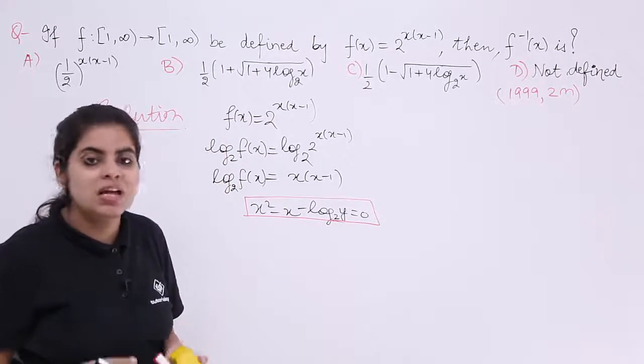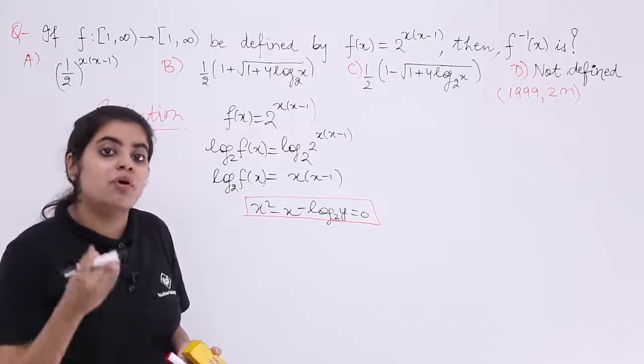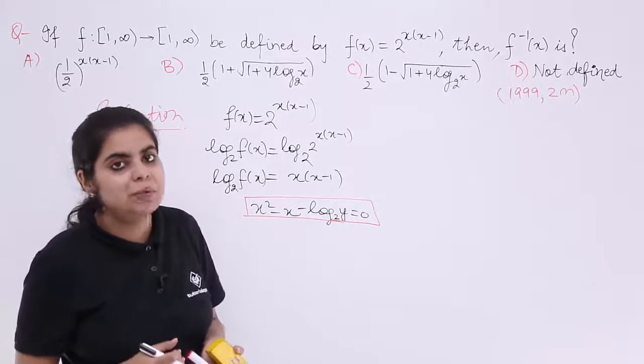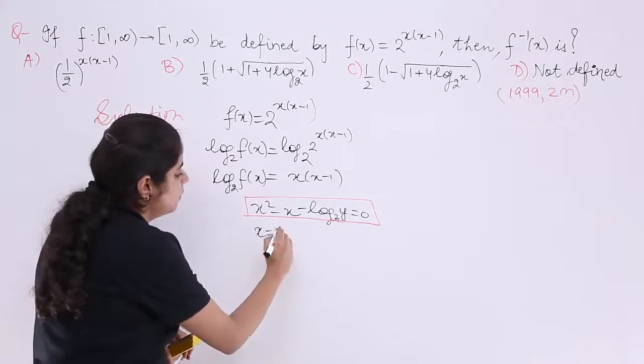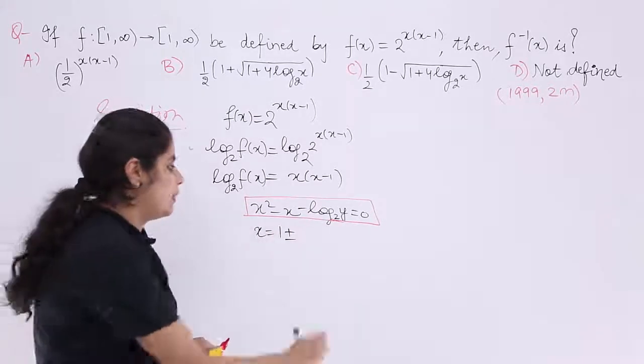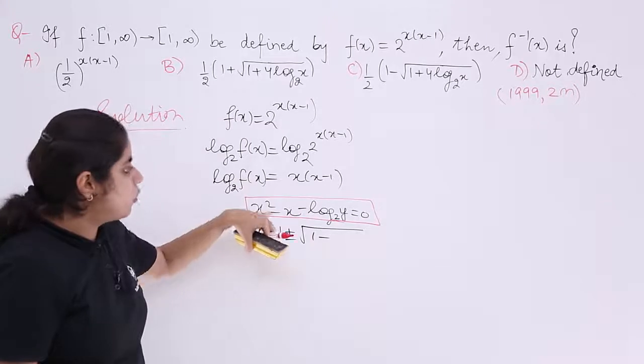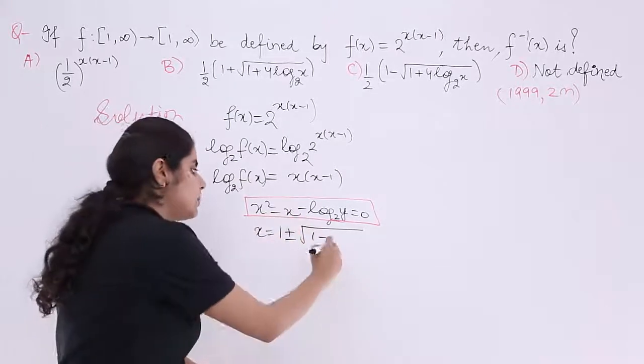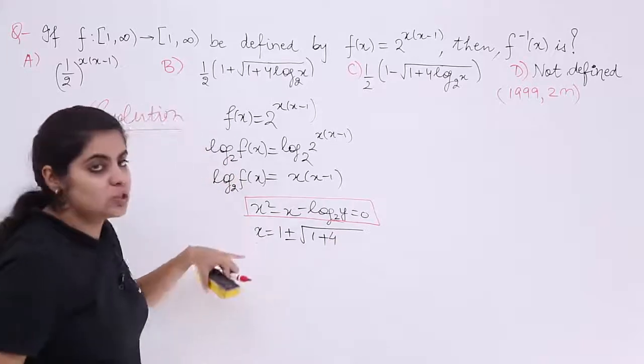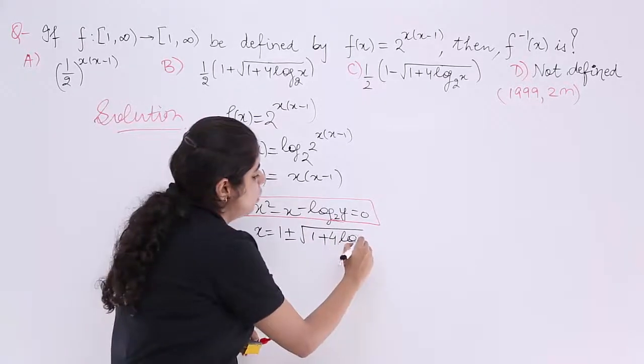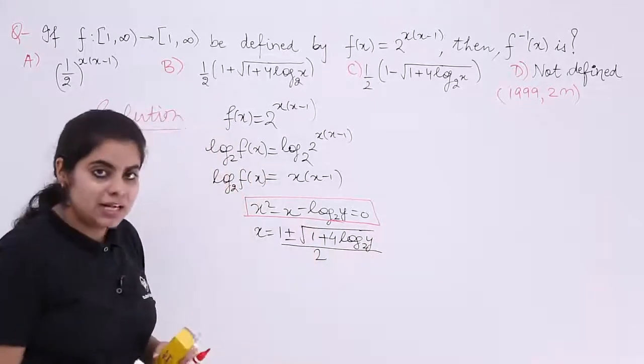As to obtain the roots, what is the formula for equation, a quadratic one for its roots? It is minus b plus minus under root b square minus 4ac upon 2a. x is equal to minus b plus minus under root b square minus 4ac. But here also it is a minus. So it becomes plus 4 times a which is 1 times c which is log y to the base 2 upon 2a. Two roots are there.